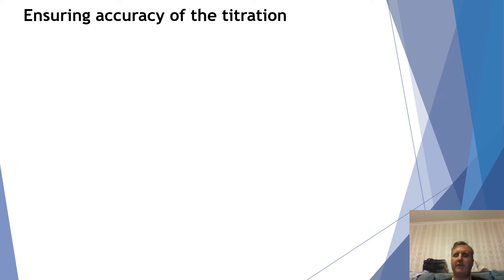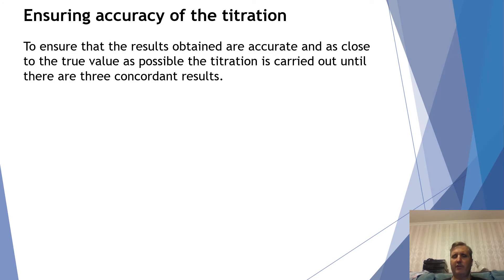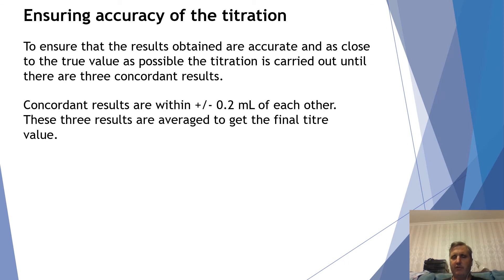Now how do I ensure that the values that I get for my final result are accurate and close to the actual value? Well I do that by finding concordant results or three concordant results, three results that agree with each other that are close to each other. Now depending on what you're titrating, the concordant results can be very close together or they can be reasonably close together. In most titrations you're looking to get values that are within 0.2 milliliters of each other.